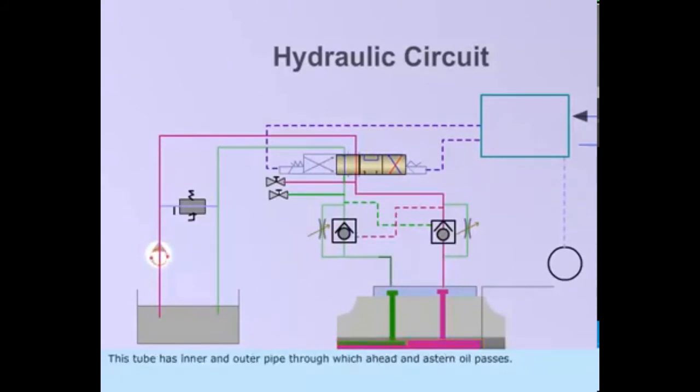This tube has inner and outer pipes through which head and stern oil passes. The tube is ported at either end to allow oil flow and segregated by seals.